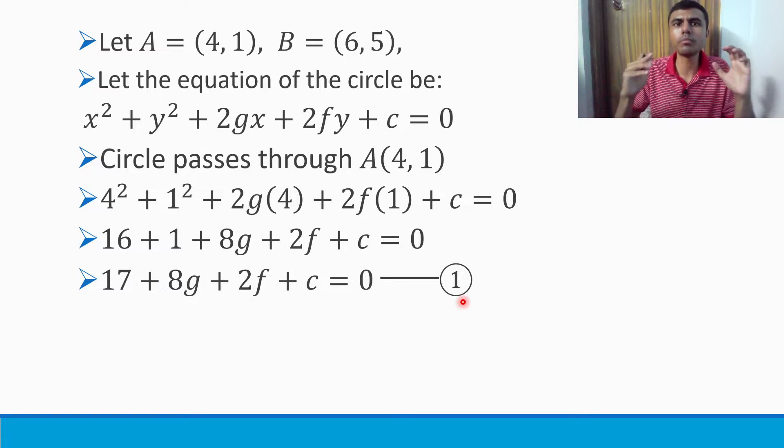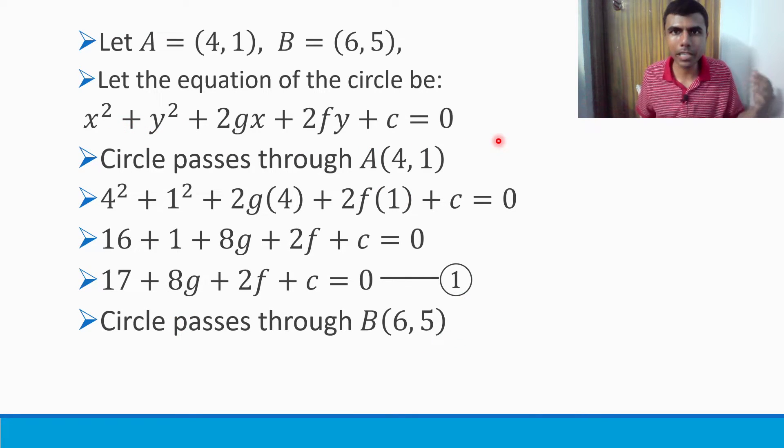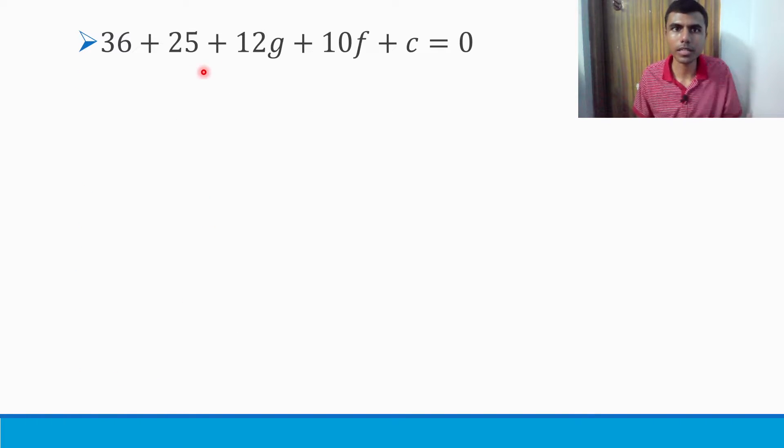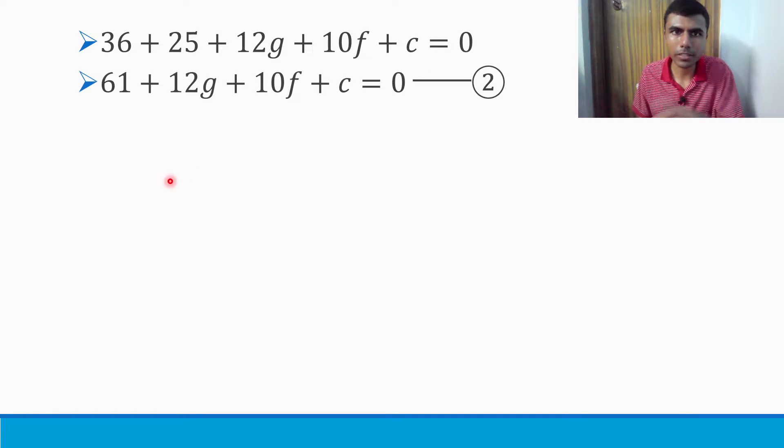Now the circle passes through B(6,5) also. In the same equation, instead of x and y, we can use 6 and 5. So 6² + 5² + 2g(6) + 2f(5) + c = 0. This gives 36 + 25 + 12g + 10f + c = 0, which simplifies to 61 + 12g + 10f + c = 0.